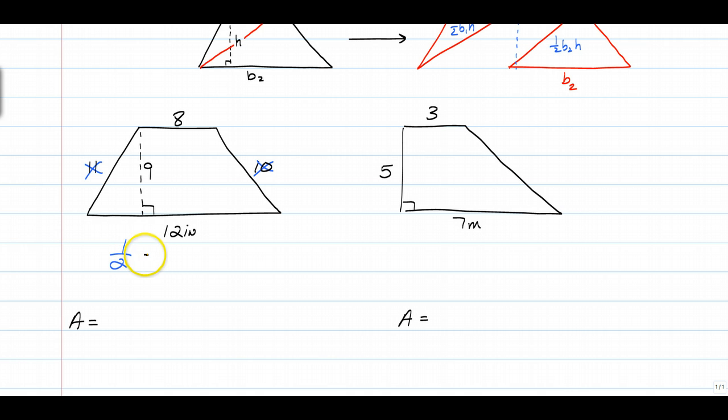One-half, your height of 9, times the sum of the bases. So that would be one-half of 9 times 20, which would give you 90 inches squared. Simple. You pause it and do the second one on your own. See what you get.